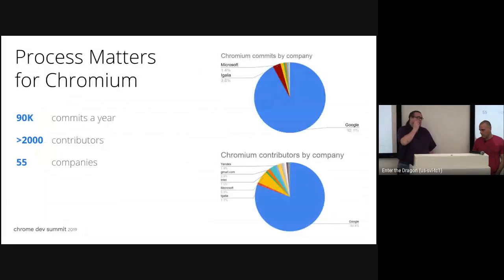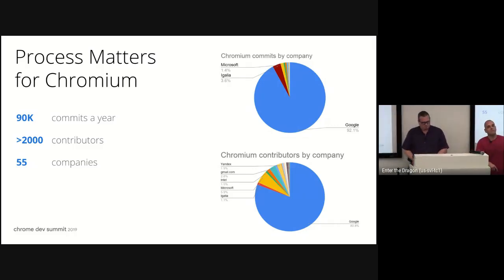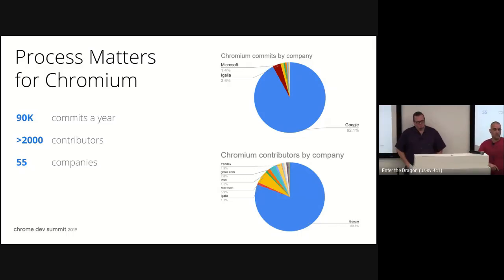So we have a lot of commits — 90,000 commits a year, 2,000 different people. We see way more than that in Chromium overall. In general, 55 different companies: about 80% Google, but 20% non-Google. So the process is basically to manage all those different contributions from different people with slightly different motivations.